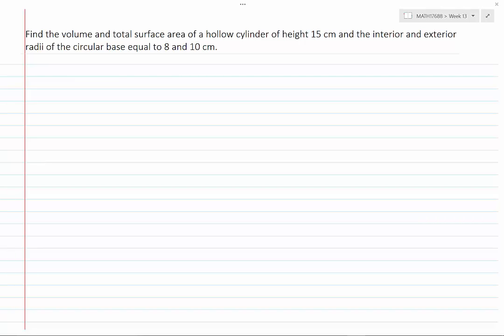Find the volume and total surface area of a hollow cylinder of height 15 cm and the interior and exterior radii of the circular base equal to 8 and 10 cm.